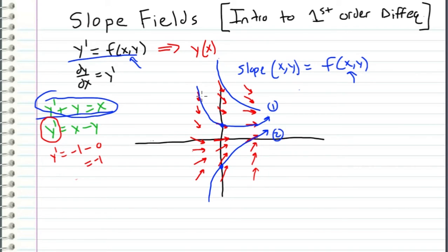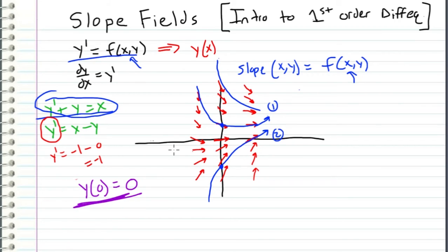There is one piece of information needed to reach a unique solution, and that's what is referred to as an initial condition — something like y(0) equals 0. If we know this, we can determine that lines not passing through that point are not the correct answer. The function has to pass through y(0) equals 0. Extending the line within the slope field gives us the actual unique solution to this differential equation given the initial condition.